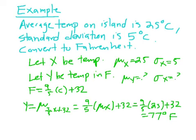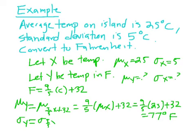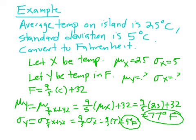Now let's find the standard deviation of y. For standard deviation, the constant 32 doesn't matter. So we're finding the standard deviation of (9/5)x + 32, which is just 9/5 times the standard deviation of x, which is 9/5 of 5, which equals 9 degrees. It's exactly things we've seen before, just written in a goofier way.